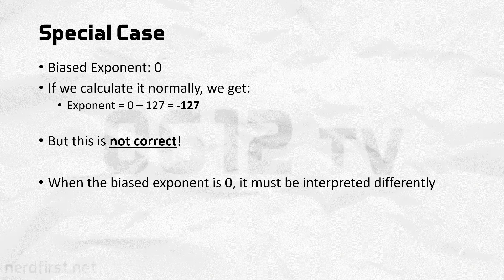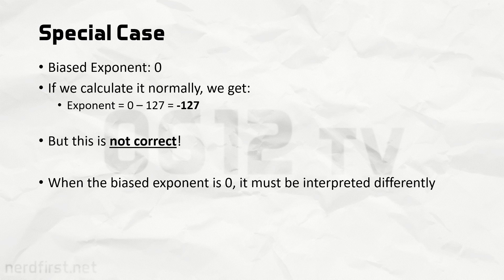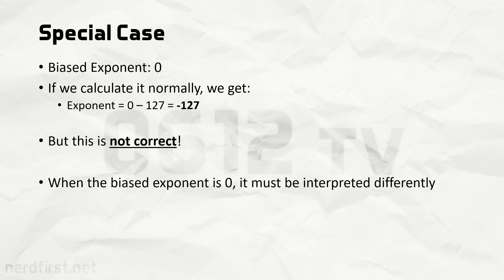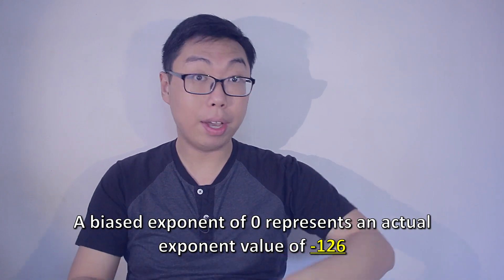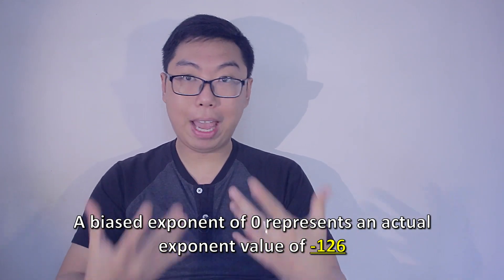If your biased exponent is stored as zero, and we use our normal method of calculation, that will give us negative 127. Except, no, that turns out to not really be the case. You see, if the biased exponent is actually zero, we have to interpret it slightly differently. For one, its actual value is still negative 126. That means it has the same exponent as when the biased exponent is actually one. They resolve to the same actual exponent value.